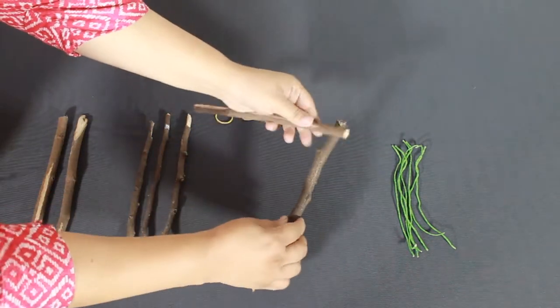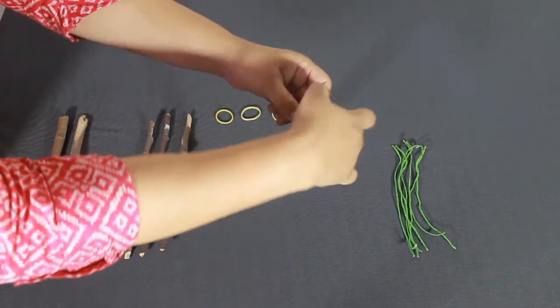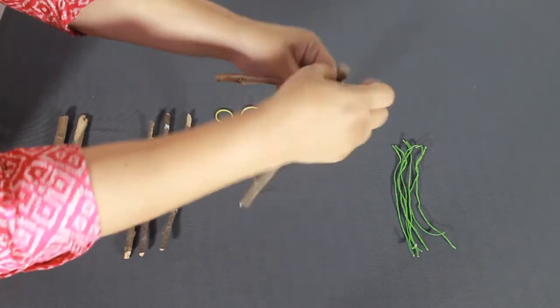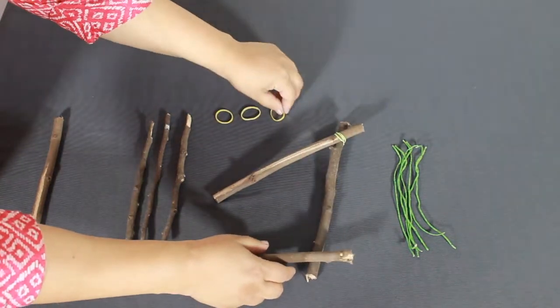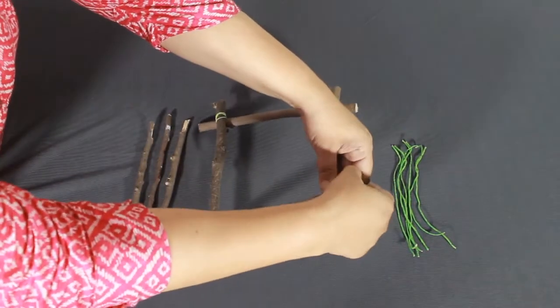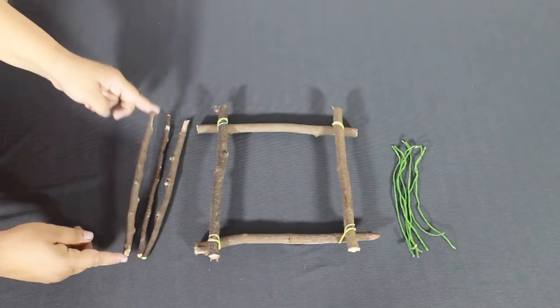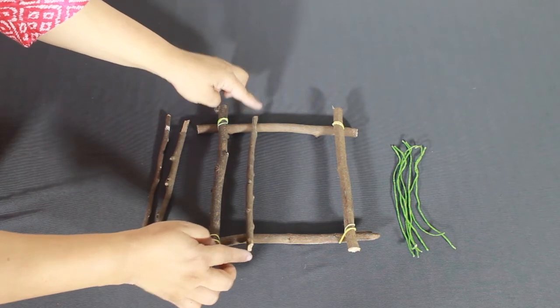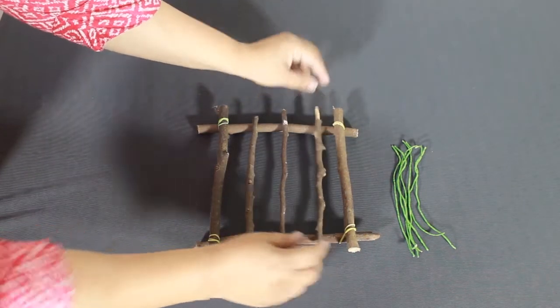Take four twigs of around the same length. Join them at the edges with a rubber band or string. This will act as the frame.